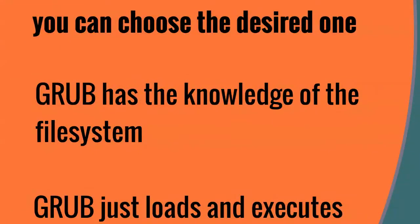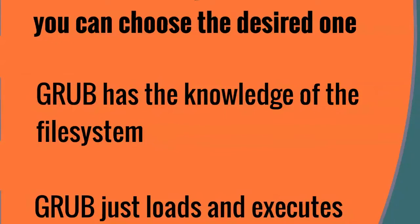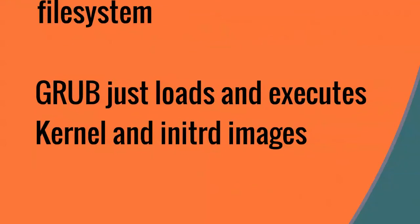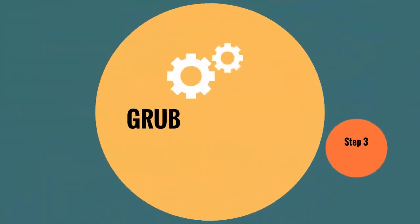GRUB has knowledge of the file system. The GRUB configuration file is located at /boot/grub/grub.conf. GRUB then loads and executes the kernel and INITRD images.